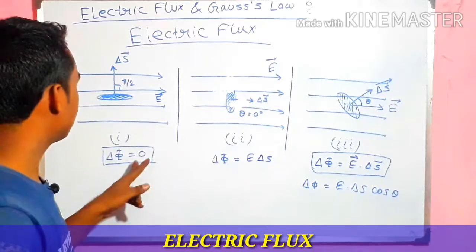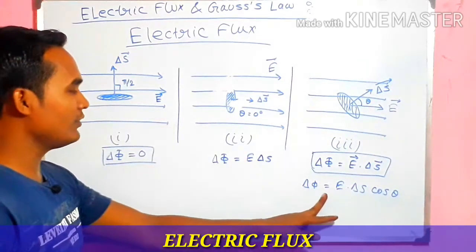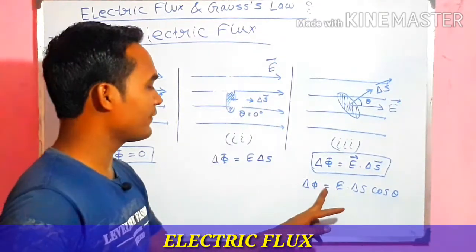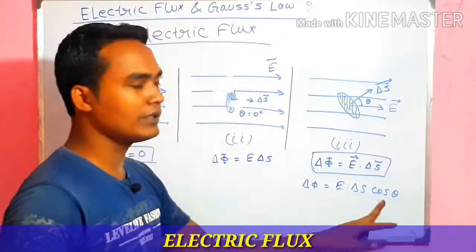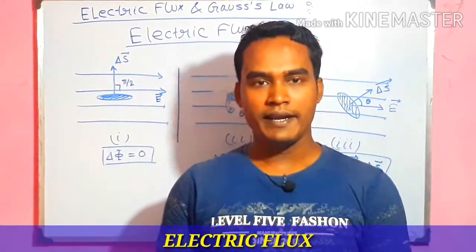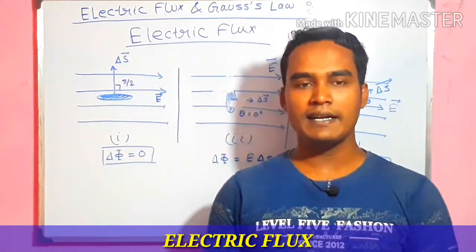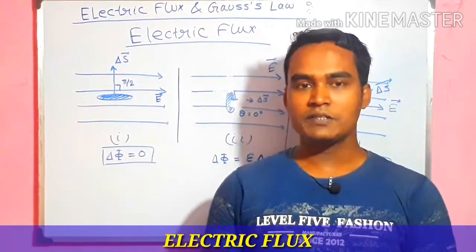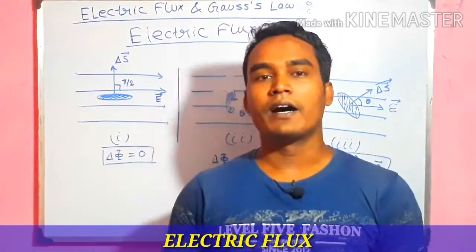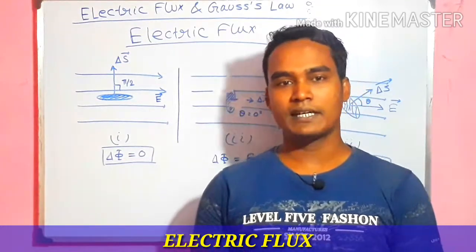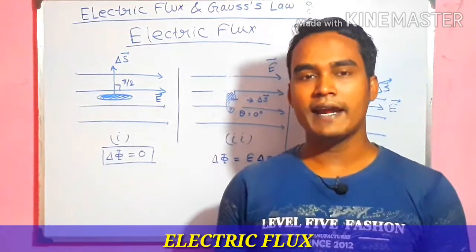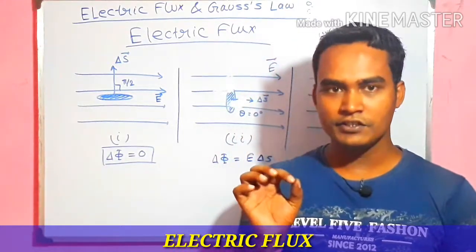When θ = π/2, delta-phi equals zero. When θ = 0 degrees, delta-phi is maximum, equal to E·ΔS. So the electric flux is maximum when the area vector and the electric field vector are parallel — in the same direction — and the flux is zero when the angle between them is 90 degrees.